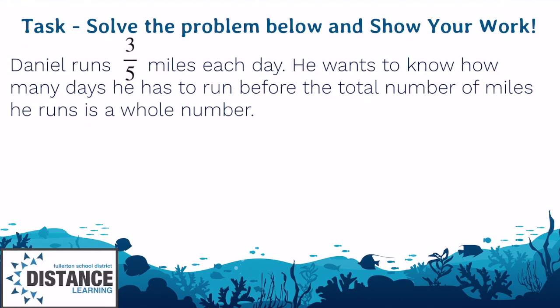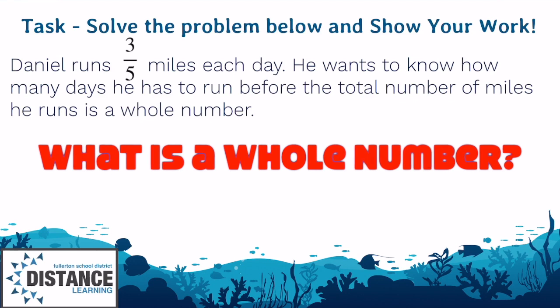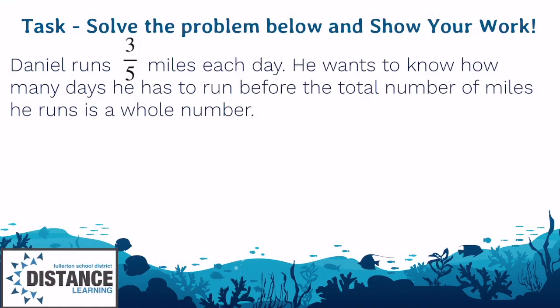In the task, you are given that Daniel runs three-fifths of a mile each day. He wants to know how many days he has to run before the total number of miles he runs is a whole number. The first thing you want to ask yourself is, what is a whole number? A whole number means there's no fraction. So whole numbers are like 1, 2, 3, 10, 12. They're whole numbers.